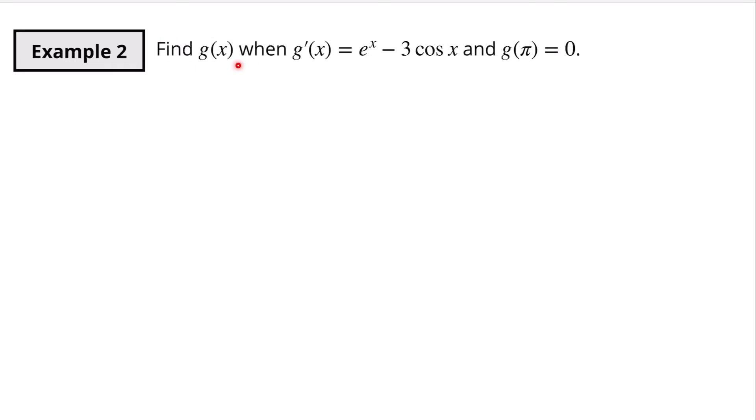We're going to find g of x when g prime is equal to e^x minus three cosine of x. And we know in the original function g of x that when we have pi for our input zero will be our output. Alright. So let's integrate g prime of x with respect to x. And that's going to be equal to the integral of e to the x minus three cosine x with respect to x.